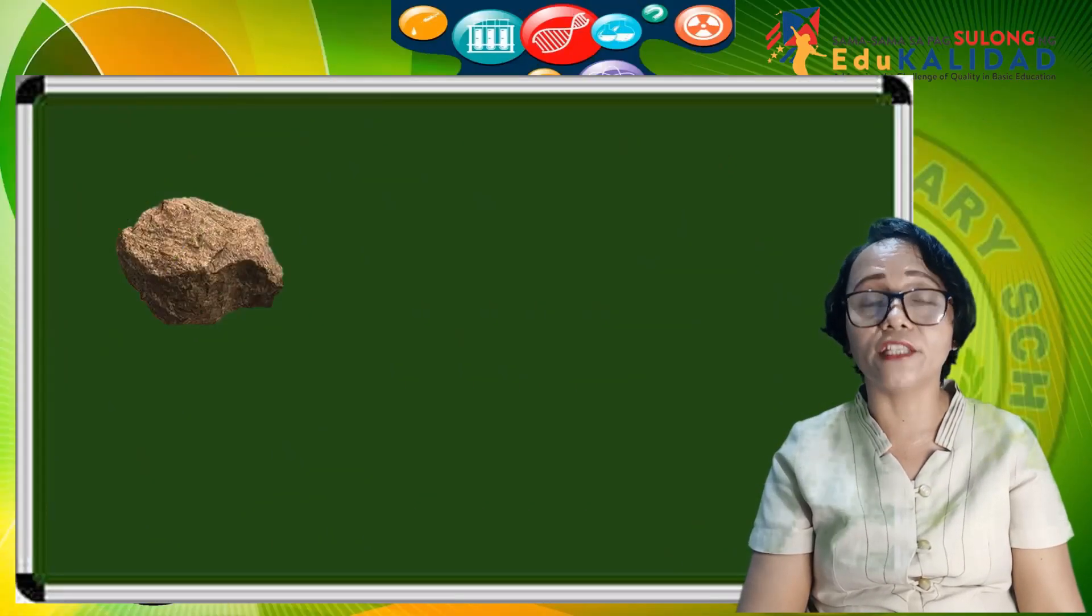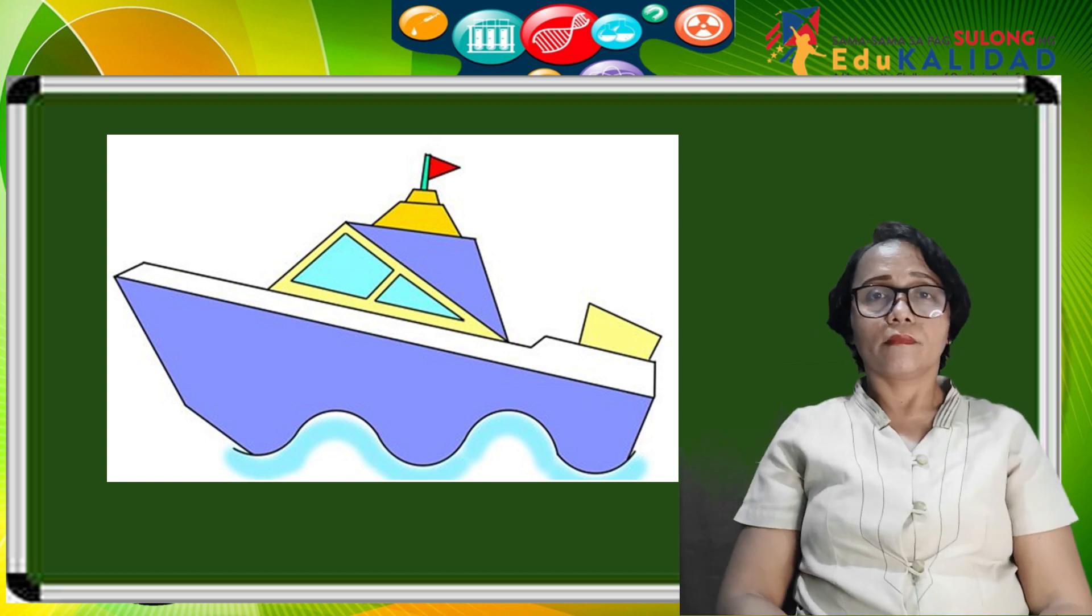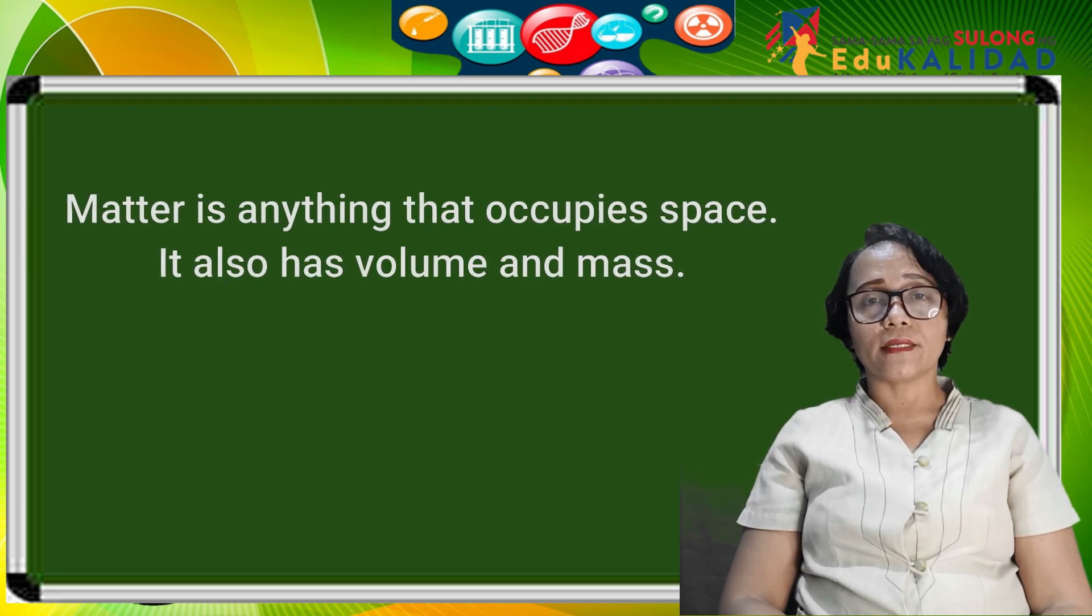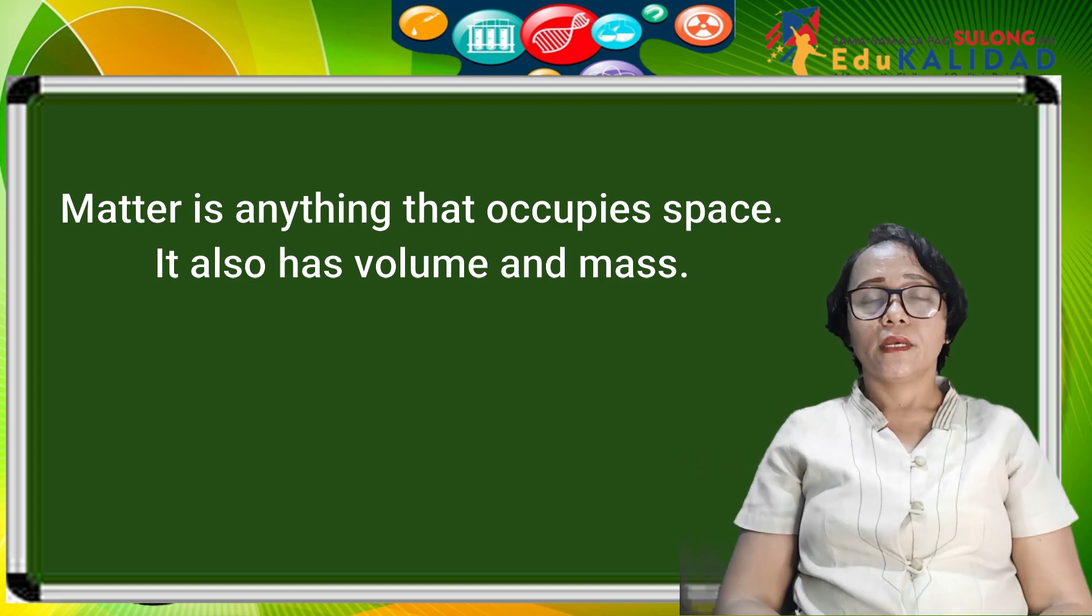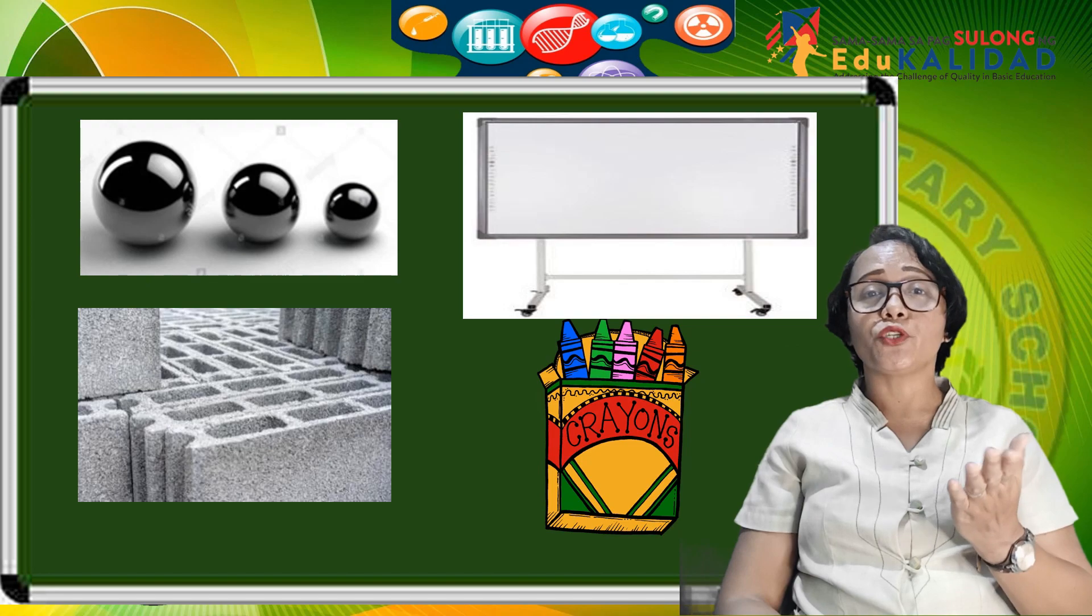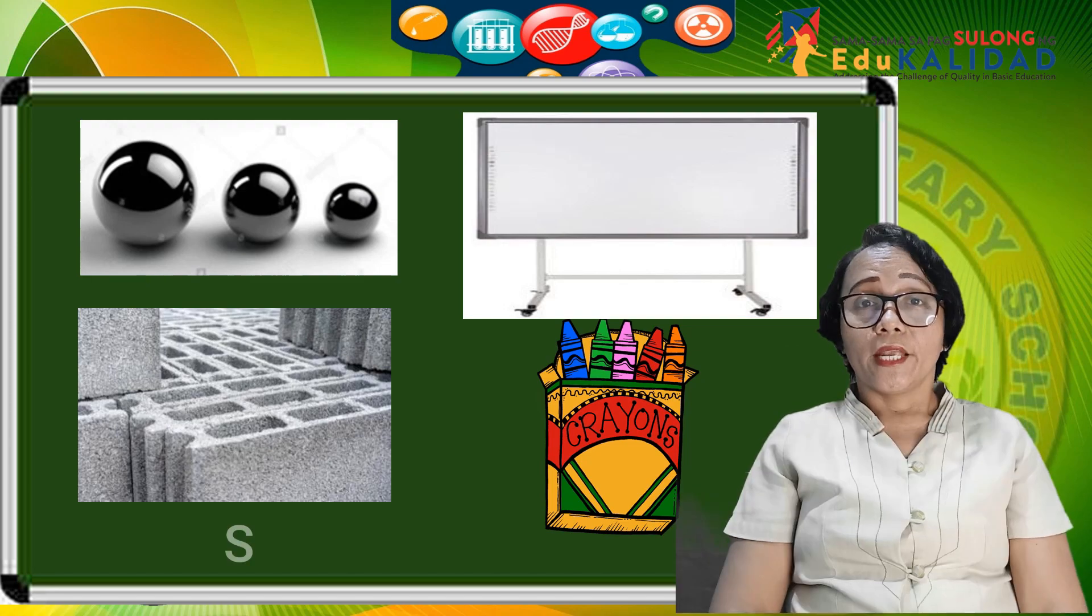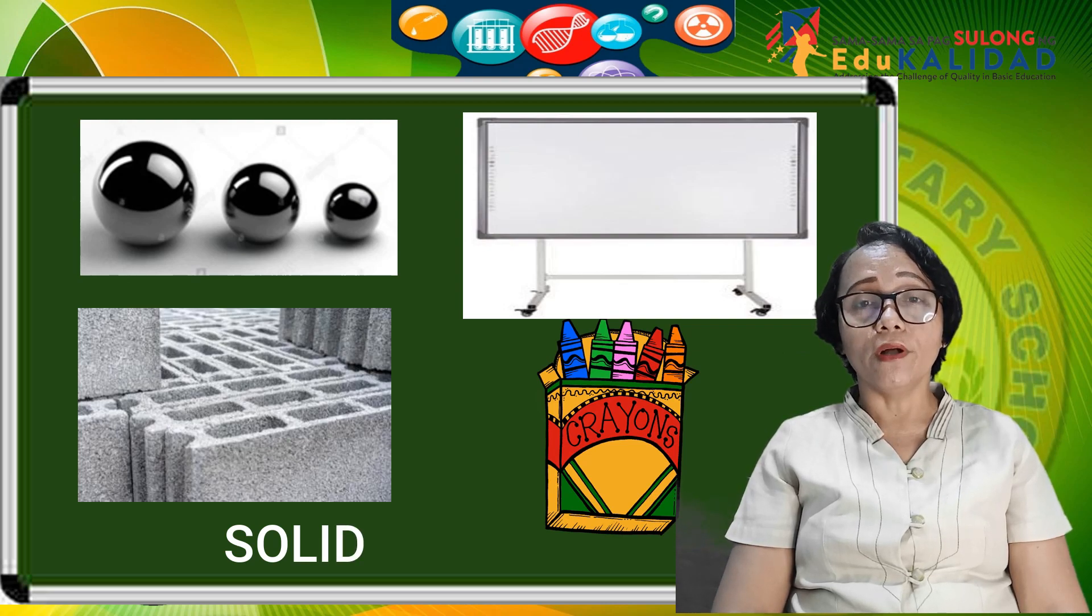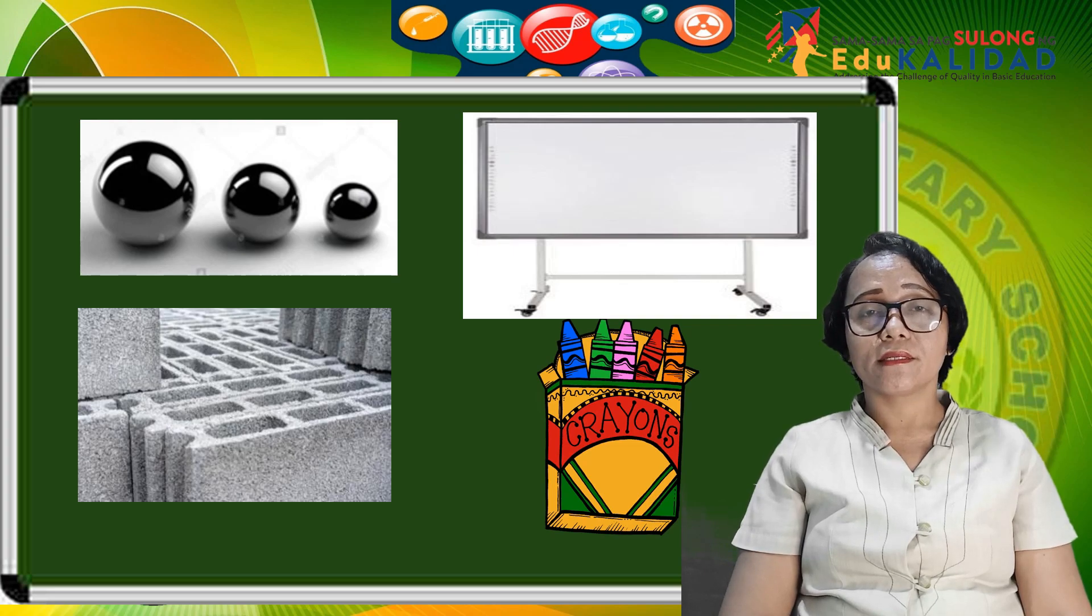Matter is anything that occupies space. It also has volume and mass. It comes in different forms such as solid, liquid, and gas. Observe this picture: In what state of matter are these materials? Can you name observable characteristics of marble, blackboard, crayon, and hollow blocks?